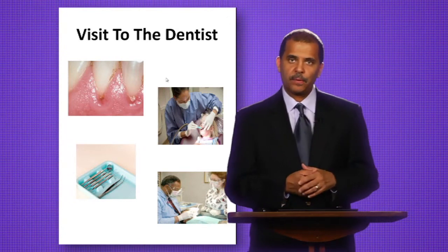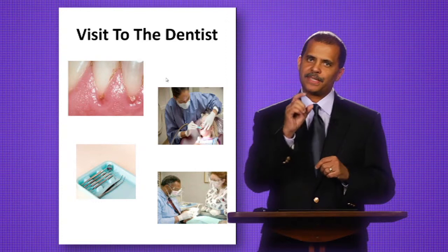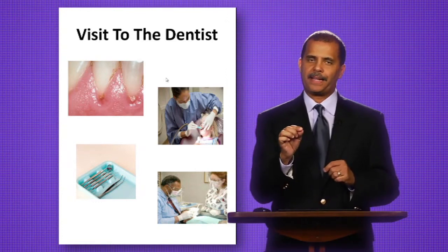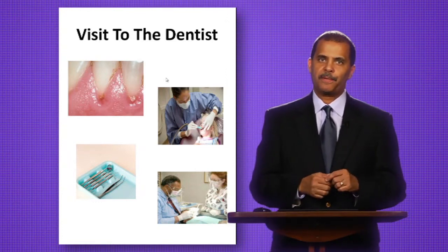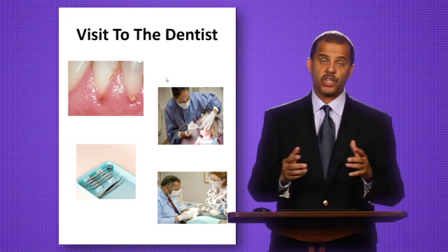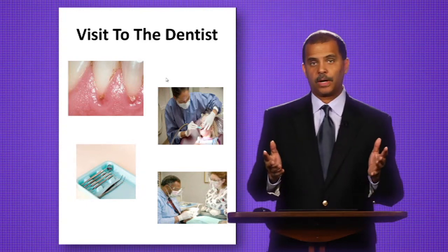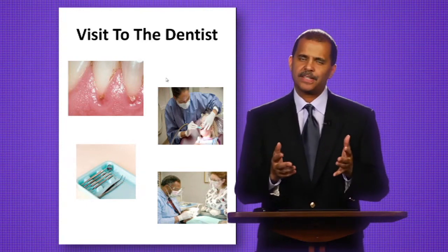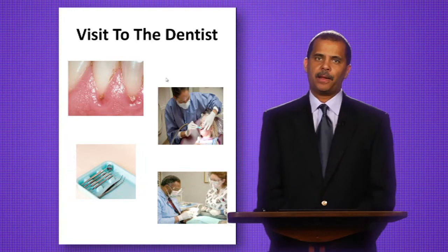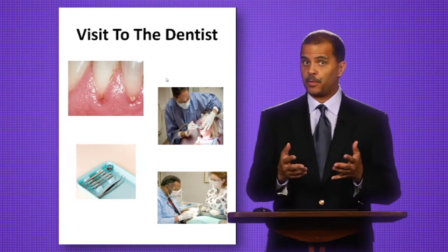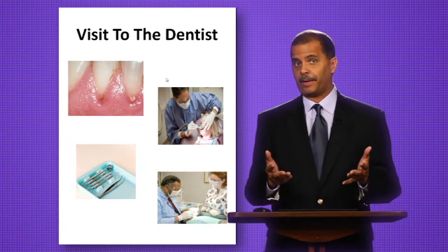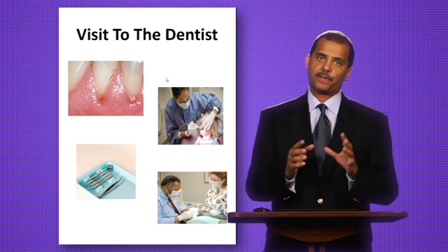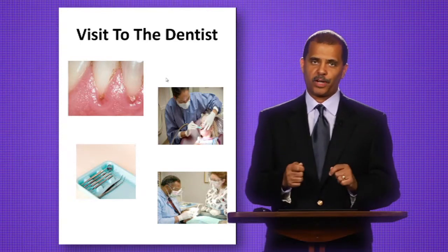So if you'll notice here on the slide, you'll see the gum line, and you'll also notice a pocket. Some of you may be recognizing that as gingivitis or gum disease, and it is. Now how does gum disease develop? It develops through a bacteria, which is an infection. So you know you're supposed to floss twice a day, and you're supposed to brush.